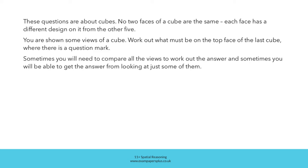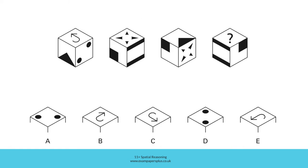In order to answer this question, we're going to consider these four views of the same cube. We're going to use what we note about the relationships between the faces on the cube to establish which one of these five answer options shows the figure missing from this face.